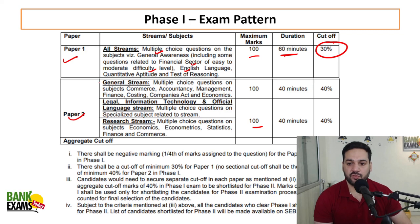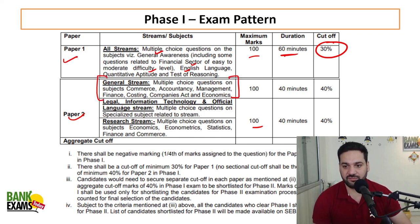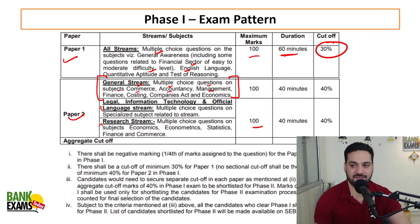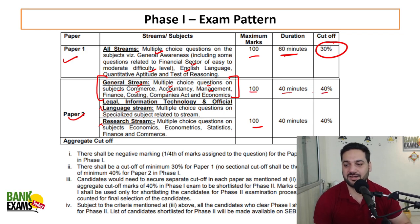In paper two for the general stream, it's an MCQ-based paper. The subjects are commerce, accountancy, management, finance, costing, companies act, and economics — we will discuss the syllabus in the next slides. 100 marks, 40 minutes, and 40% is the cutoff. Negative marking is one-fourth.